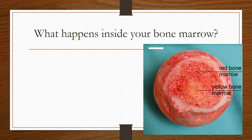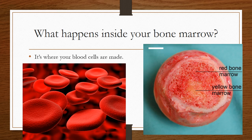Isn't that a cool picture of the two kinds of marrow? What happens inside your bone marrow? It's where your blood cells are made.